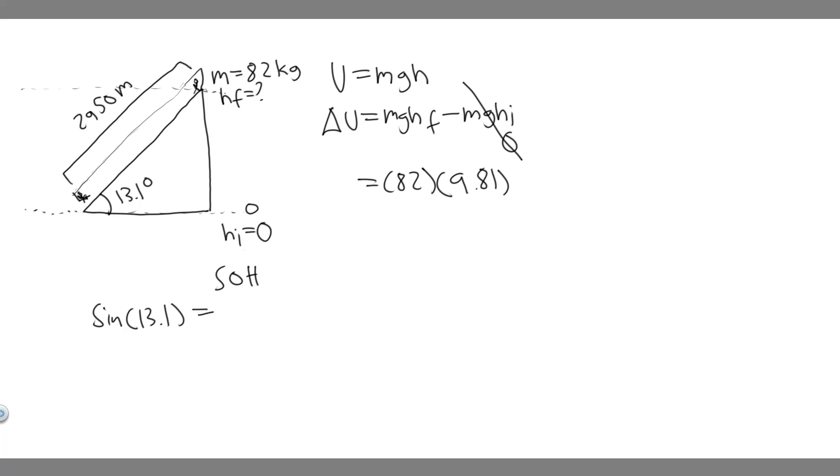We have this angle and we have this length. So if you have an angle and a length, you can solve for one of the other lengths. The way we're going to do that is by using the sine function. We know the sine of an angle, in this case 13.1, sine is opposite over hypotenuse. So I'm going to call the opposite y. And y is what we're solving for. So it's y over the hypotenuse, which is 2,950. So if we multiply both sides by 2,950, we're going to be able to get y.